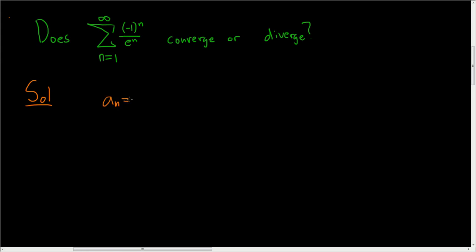Here, a sub n is the non-alternating part, so it's 1 over e to the n. And to use the alternating series test, we have to check two conditions.